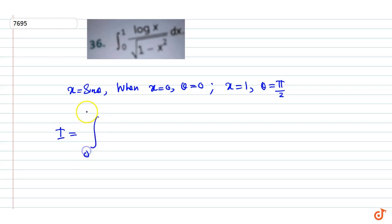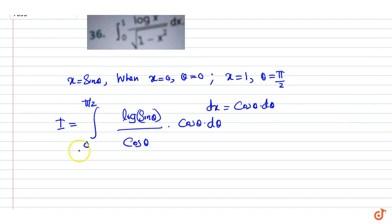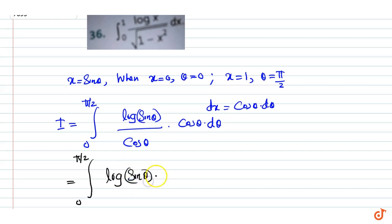The integral becomes I equals integral from 0 to pi by 2 of log(sin theta) divided by the square root of 1 minus sin squared theta, times cos theta d theta. Since 1 minus sin squared theta equals cos squared theta, the square root is cos theta, which cancels, giving I equals integral from 0 to pi by 2 of log(sin theta) d theta.